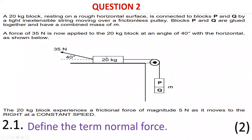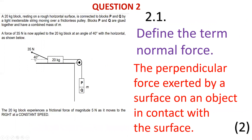Question two. We have a 20 kg block with objects P and Q of combined mass m, and a 35 newton applied force. The system moves to the right at constant speed, so acceleration is zero. Question 2.1: define the term normal force — two marks. Please memorize all definitions for each topic.